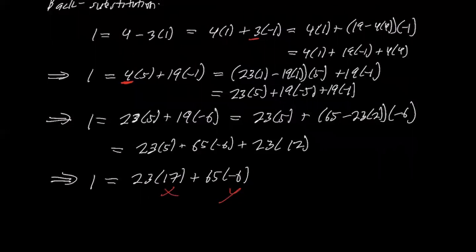It also says that if we reduce this mod 65, it says that 1 is 23 times 17 in Z mod 65. So that 17 is the multiplicative inverse of 23.